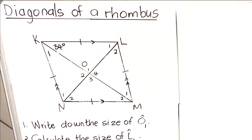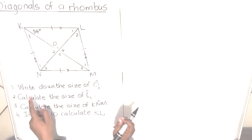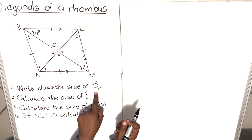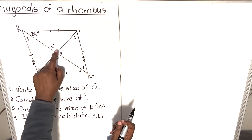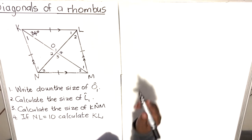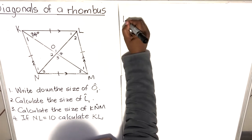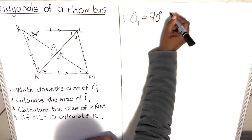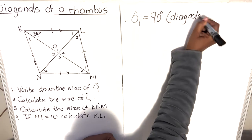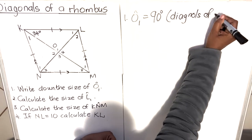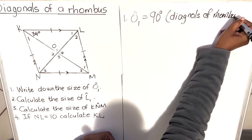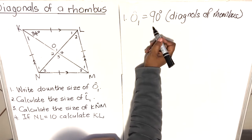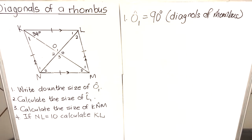Question one says: write down the size of O1. O1 is this angle here, so O1 is equal to 90 degrees. The reason is: diagonals of a rhombus bisect each other at 90 degrees, so that angle will be 90 degrees.